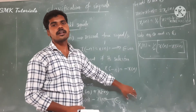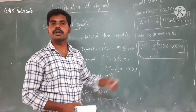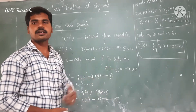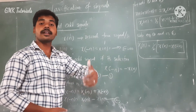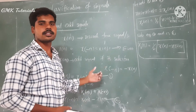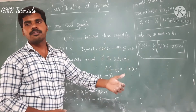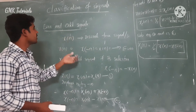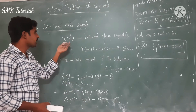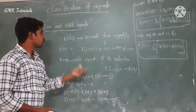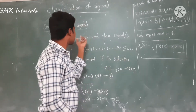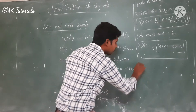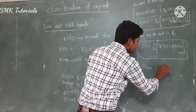Third is causal and non-causal: if x of n value is zero for n less than 0, the given sequence is called a causal signal; if x of n is equal to some value for n less than 0 also, those signals are called non-causal signals. Fourth is even and odd components: the even condition is x of minus n equals x of n, and the odd condition is x of minus n equals minus x of n.